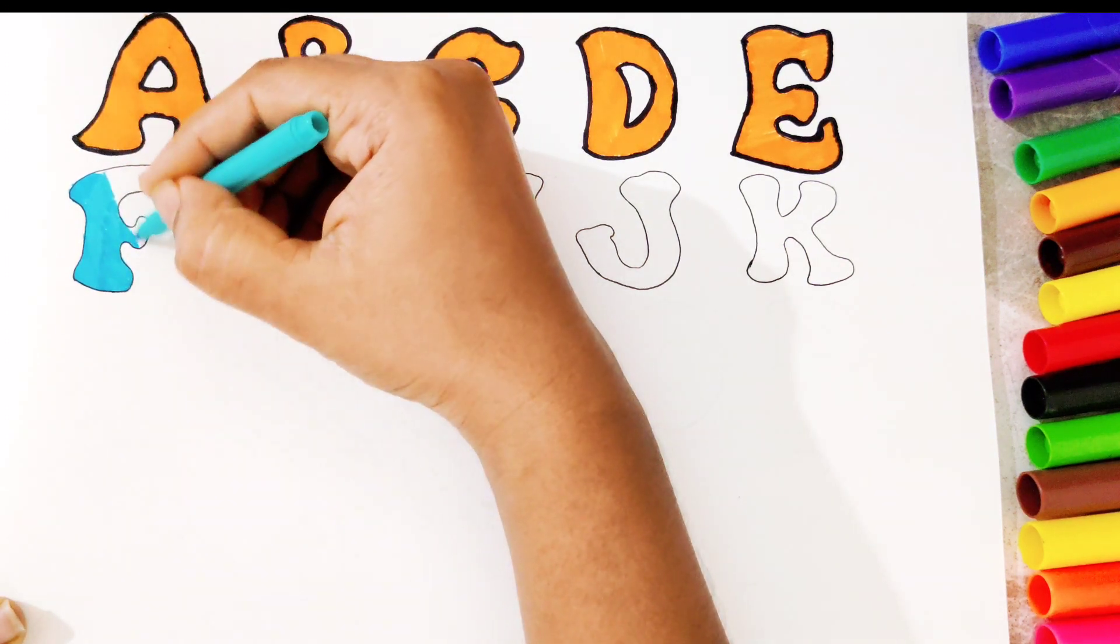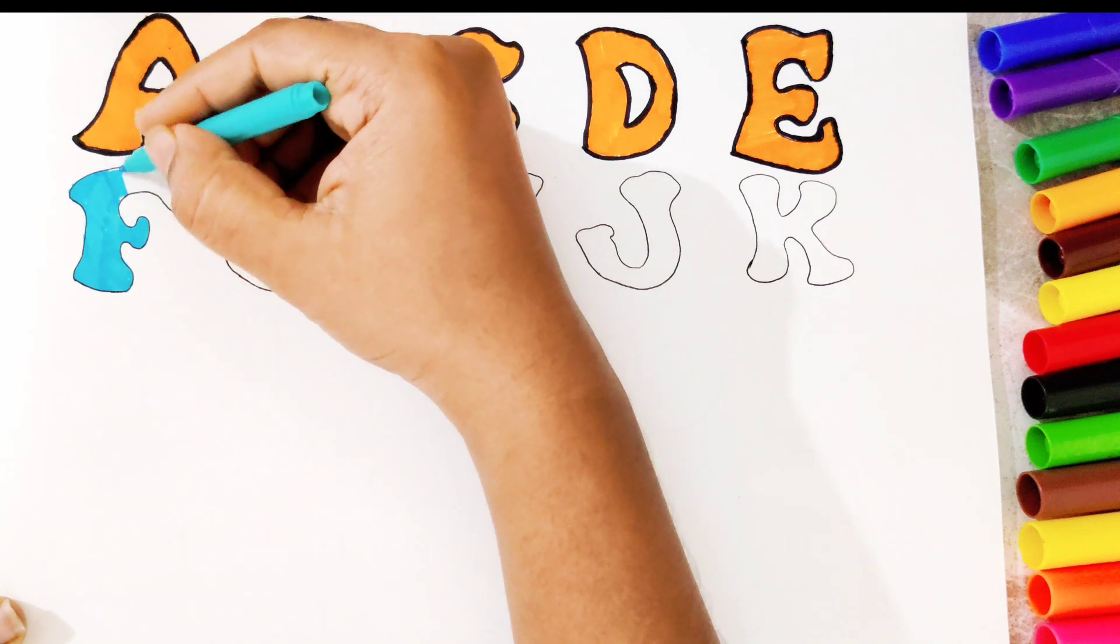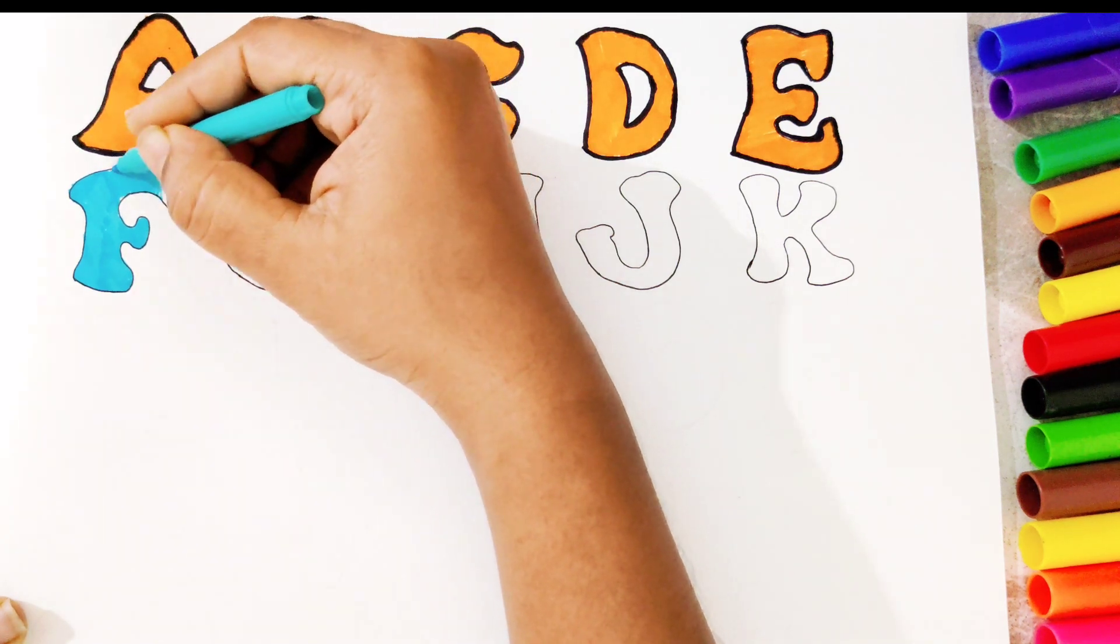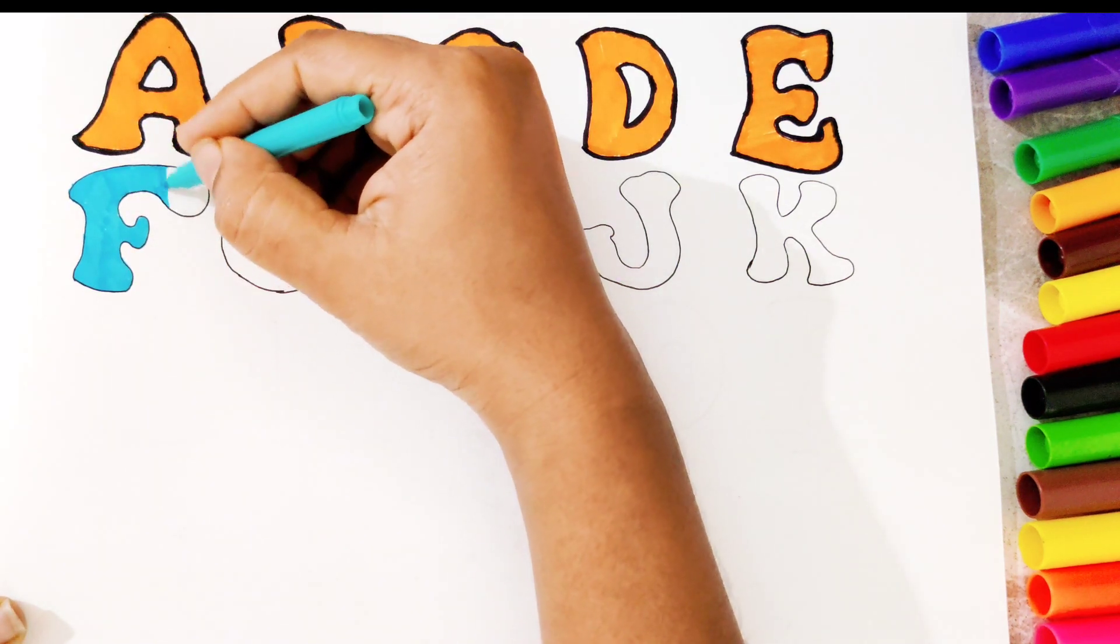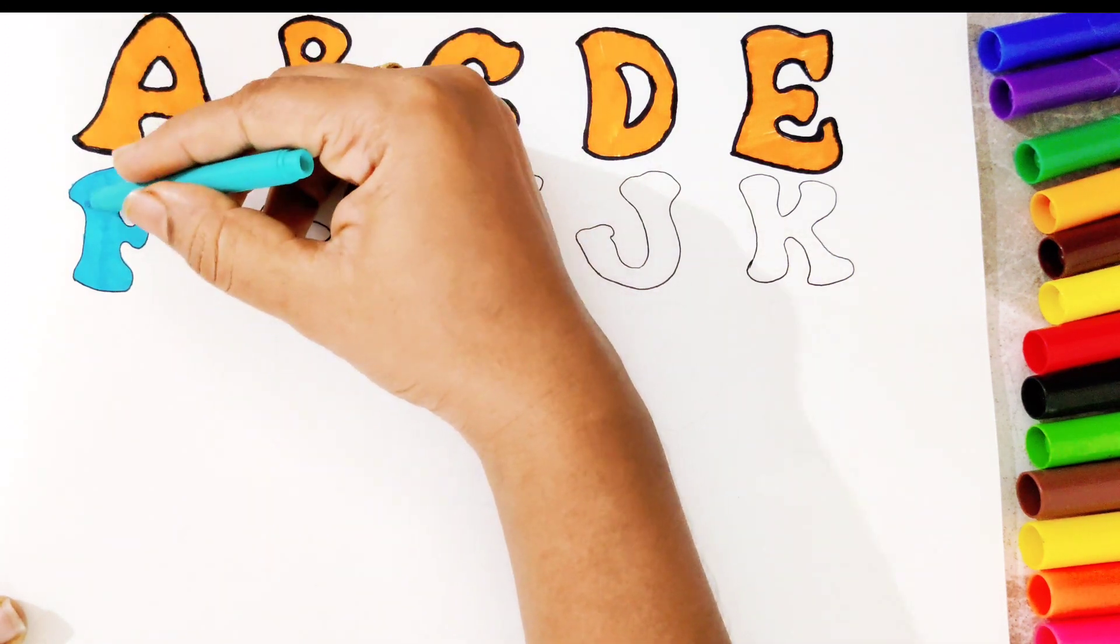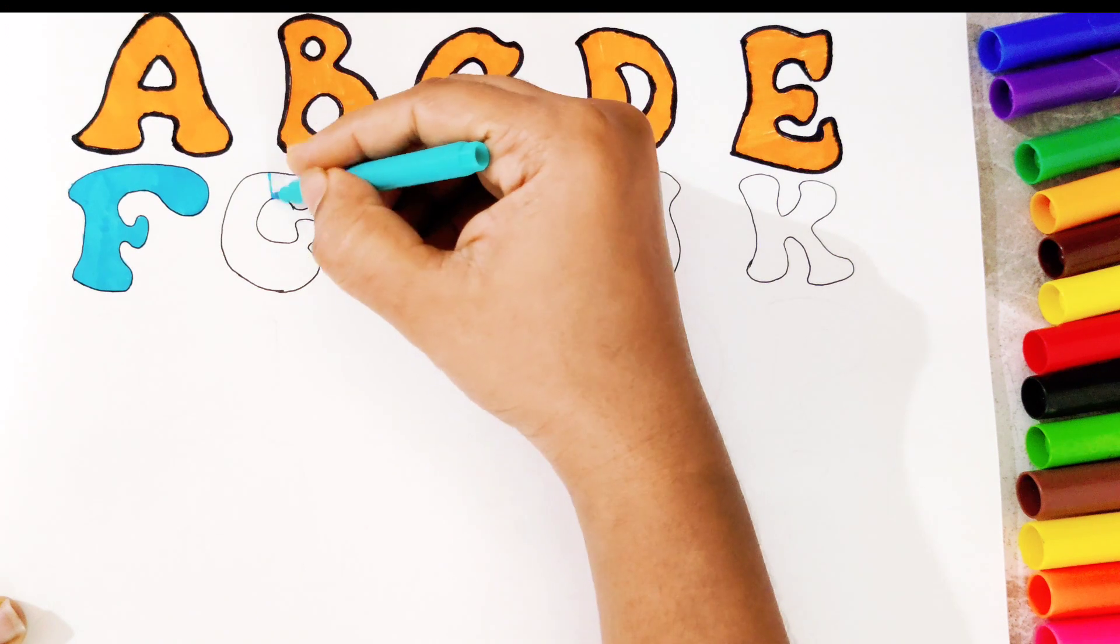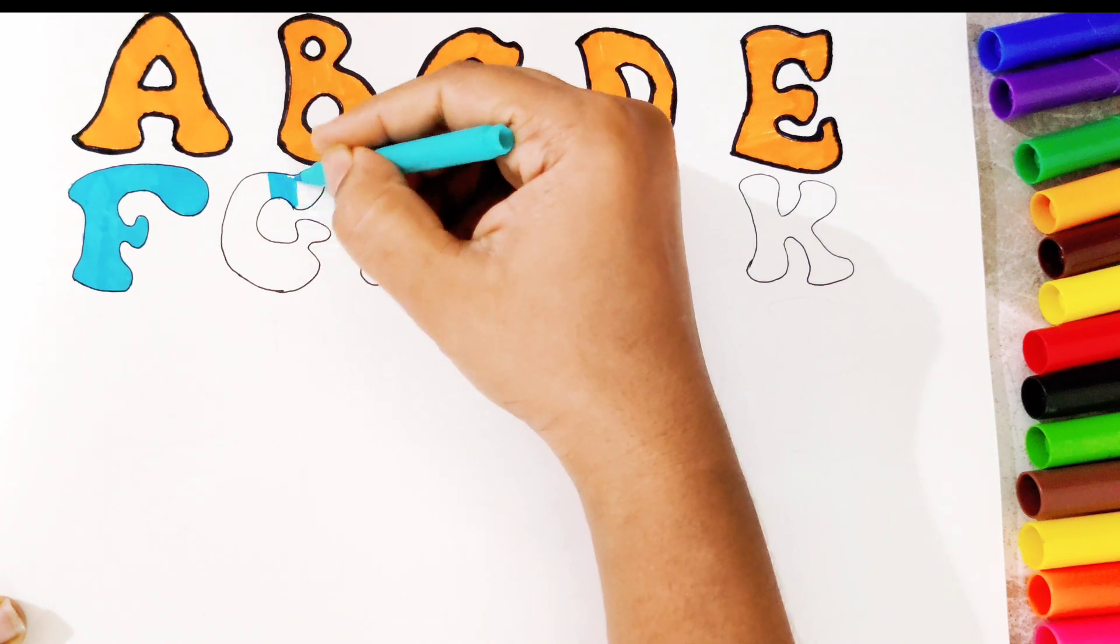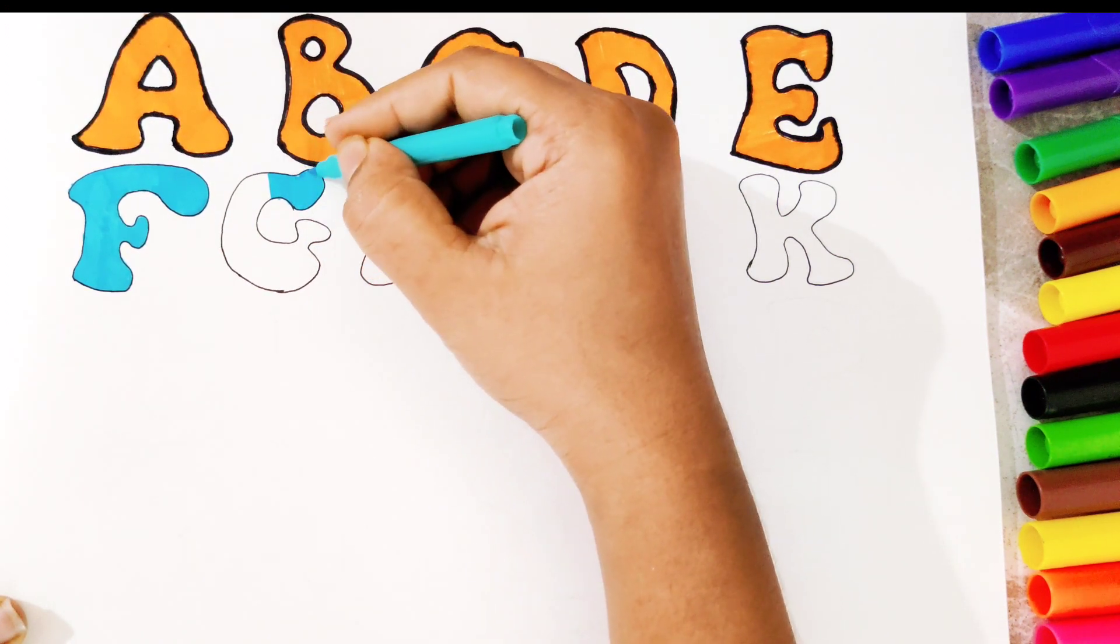This is sky blue color and this is one of my favorite colors. Wow, F in sky blue color is looking very nice. Now let's continue coloring rest of the alphabets.